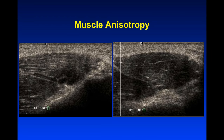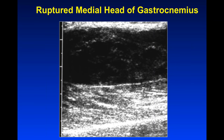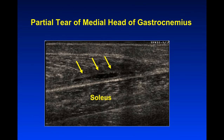A normal muscle has a pennate pattern, and when it's abnormal we lose that pattern. This is somebody who was playing tennis, felt a pop in the calf — the pennate architecture is gone and replaced by an amorphous hematoma. The whole medial head of the gastrocnemius ruptured, with the intact soleus muscle deep to it for comparison. This is a partial tear of somebody who was dancing at a party, felt a pop, some swelling and bruising — the gastroc muscle pulled away from the fascial attachment: a partial tear of the medial head.